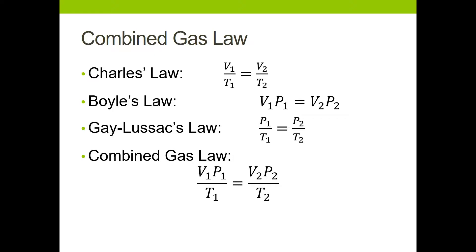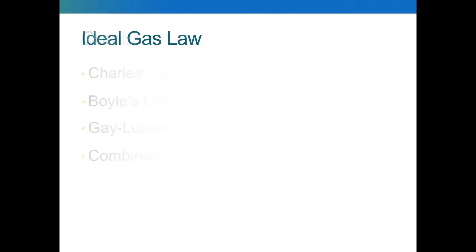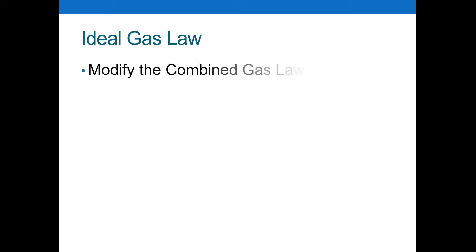The combined gas law relies on the amount of gas remaining constant — we were not including Avogadro's law. When we do include Avogadro's law, we get the ideal gas law. We take Avogadro's law and pile it in with the combined gas law, and that is what we call the ideal gas law.